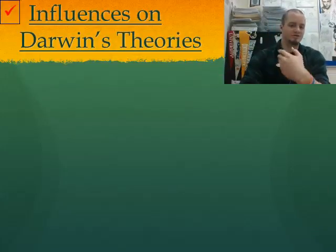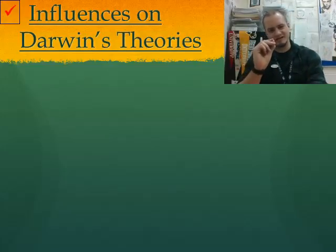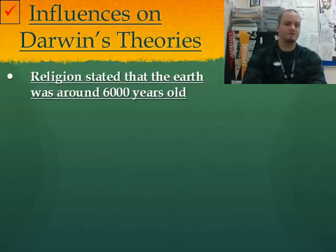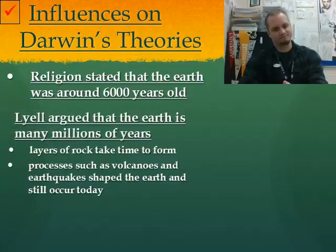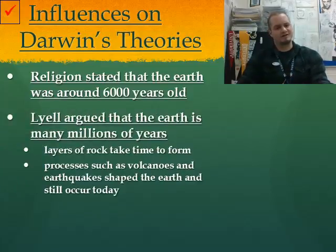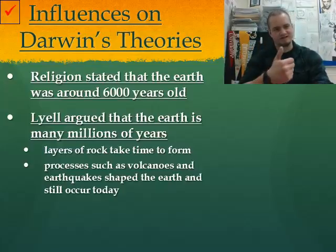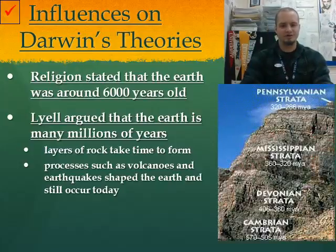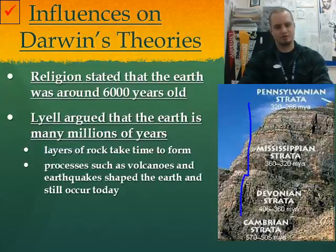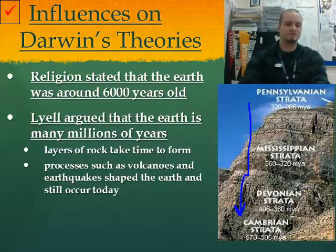The influences on Darwin's theories included a wide variety of different ideas. The first was the Earth itself. Religion at the time stated the Earth was around 6,000 years old, which in a time span of history is not really that long. A man by the name of Lyell argued that the Earth has to be many millions of years old. His reasoning was that layers of rock take time to form, and processes such as volcanoes and earthquakes shape the Earth and are still occurring. The further down you go in rock layers, the older it gets, showing new rock layers developing over time.